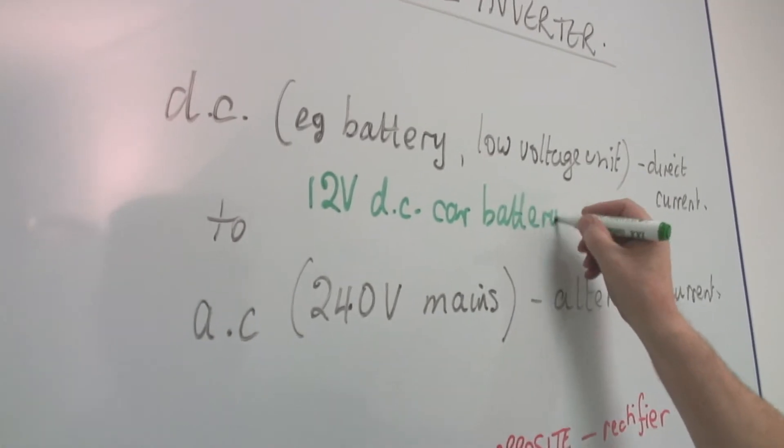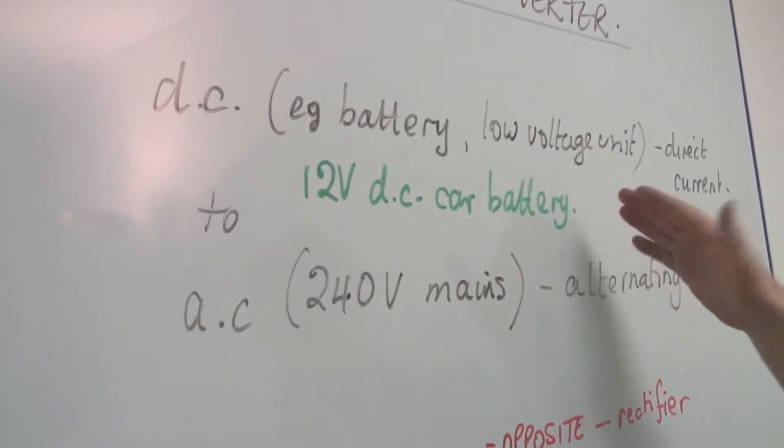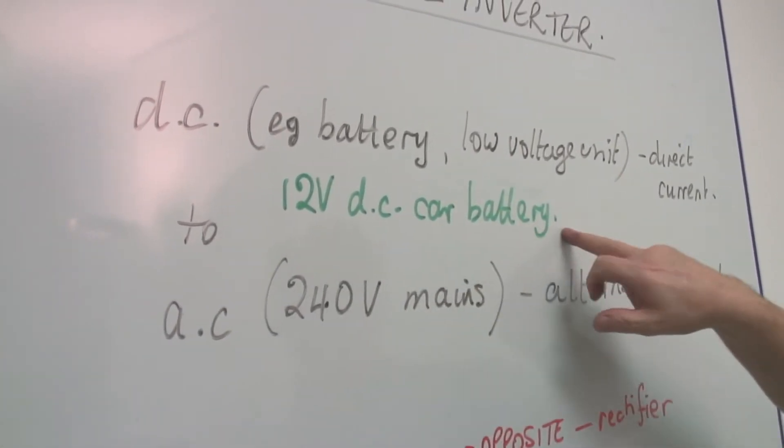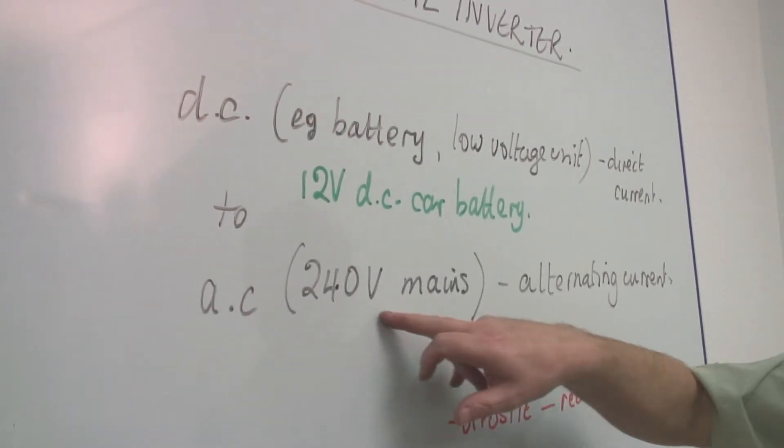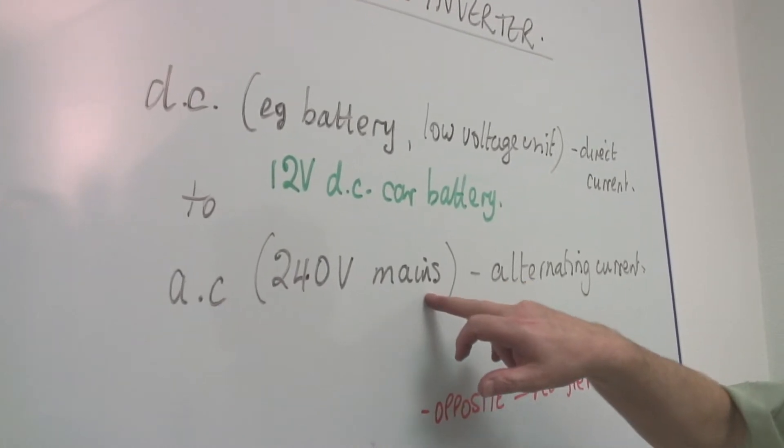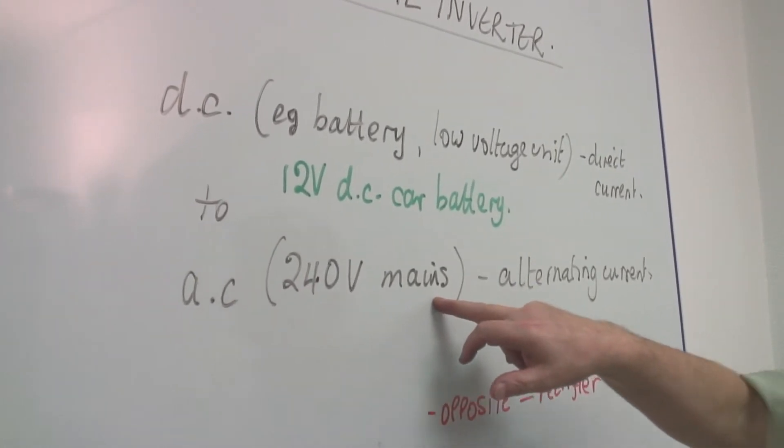So this is very important. You want from this 12 volt car battery to get an alternating current like 240 volt mains current, and it's not easy.